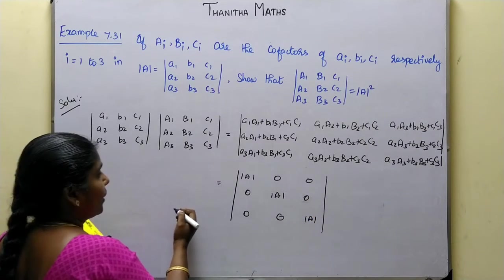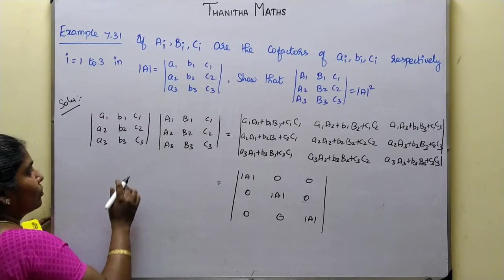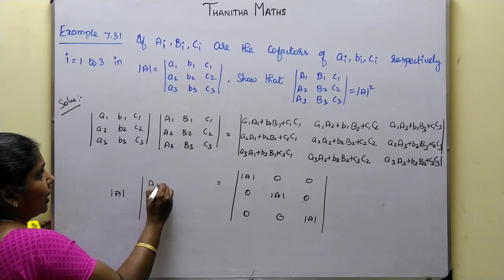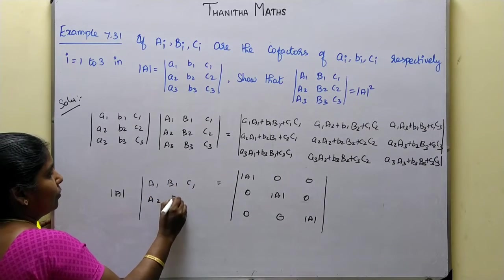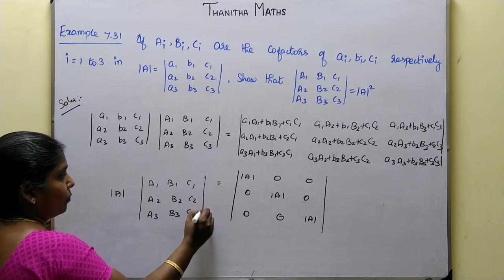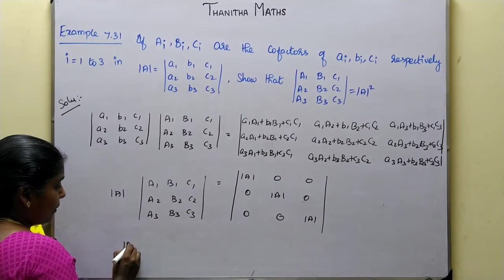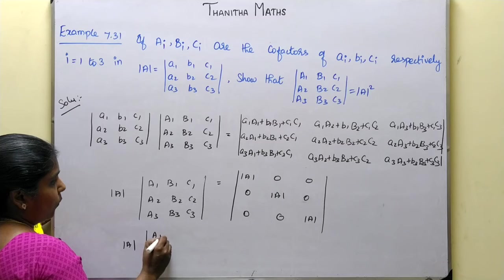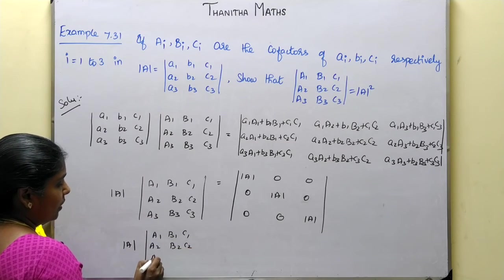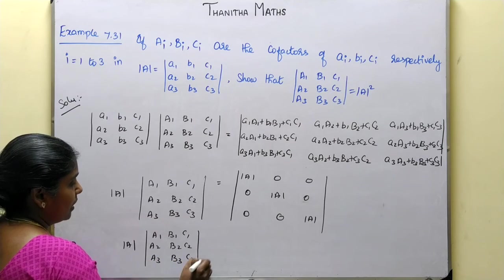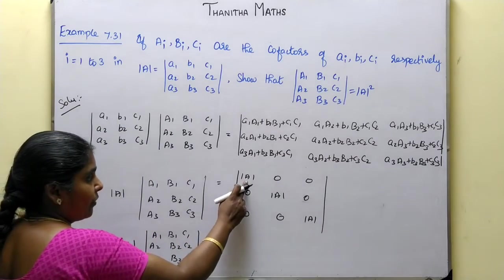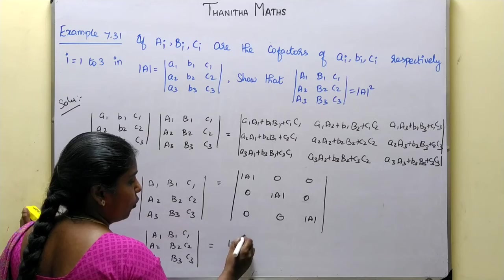If we get the determinant of A, we replace accordingly. This determinant is A1, B1, C1, A2, B2, C2, A3, B3, C3 — this is the determinant of A. We compare it: A1, B1, C1, A2, B2, C2, A3, B3, C3. This is the diagonal matrix, and we can multiply along the diagonal: det(A) × det(A) × det(A) = det(A) whole cube.